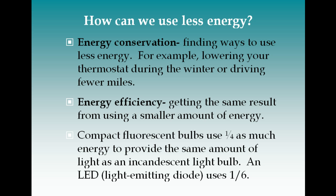The beginning of the chapter asks how we can use less energy. We did talk about that with Chapter 12 — you need to find ways to use less. Although the US has been better at getting more efficiency out of our energy, like with compact fluorescent light bulbs or LED lights, we are still a society that uses a lot of electronic devices. Conservation is finding ways to use less energy, and efficiency is getting the same result but using a smaller amount of energy. Compact fluorescent bulbs are much more efficient than a regular incandescent light bulb.